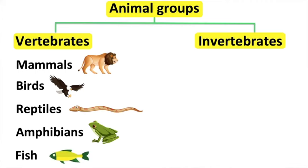Fish have scales and they use their gills to breathe. Fish lay soft eggs in water and their temperature changes; therefore, they are cold-blooded animals.